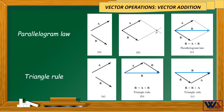Also, we can connect the ending point of B to the starting point of A to get the same result, as shown in figure C. As we can see, by using the triangle rule we get the triangular shape where we can apply the sine and cosine rules, as we will see later.